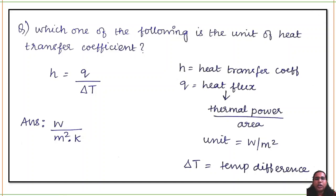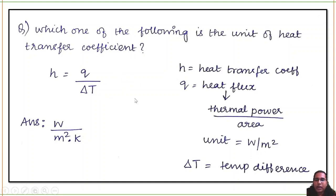Twelfth question: what is the unit of heat transfer coefficient? The formula is H = Q/(A·ΔT), where Q/A is heat flux in W/m². Temperature is in Kelvin. Therefore the unit of heat transfer coefficient H = W/(m²·K). That is the answer.